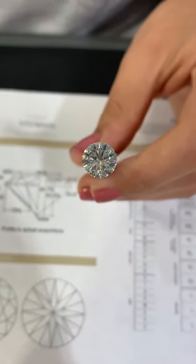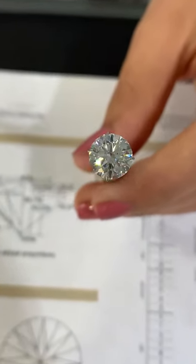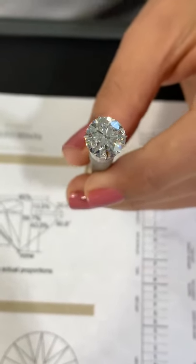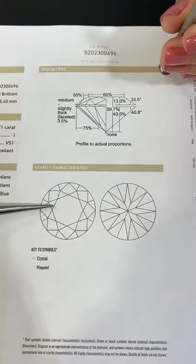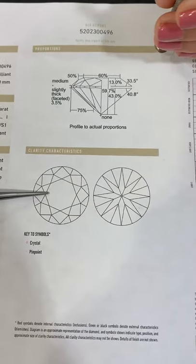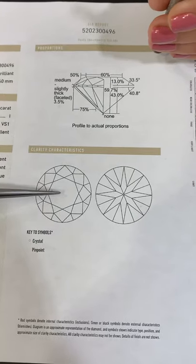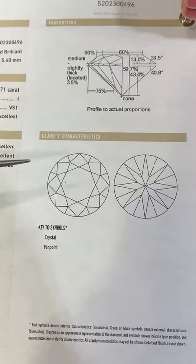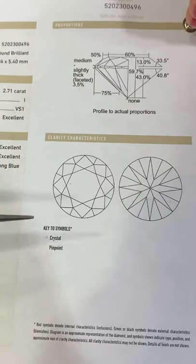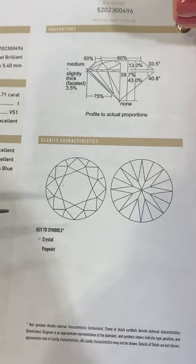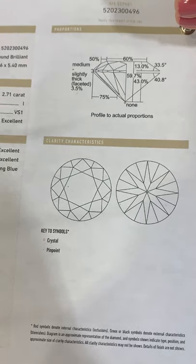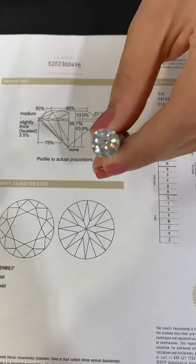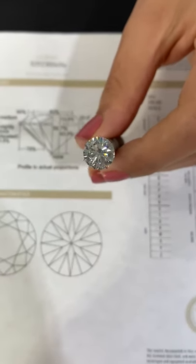Even for us, VS1 can sometimes be challenging to grade because the inclusions are so small. The location of the inclusion matters — this crystal is kind of in the center but off to the side. If it were dead center and easily picked up under a microscope, this might have been graded differently, but in general this diamond has a very small amount of inclusions and they are also very tiny. This is a very beautiful, clean, and crisp VS1 diamond.